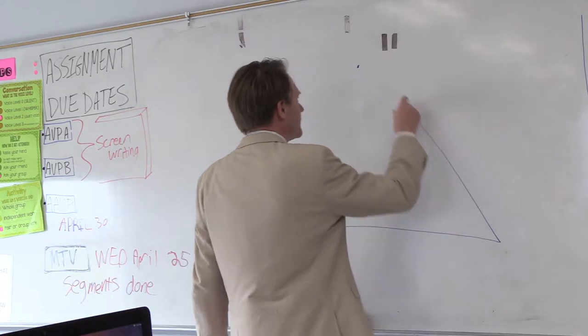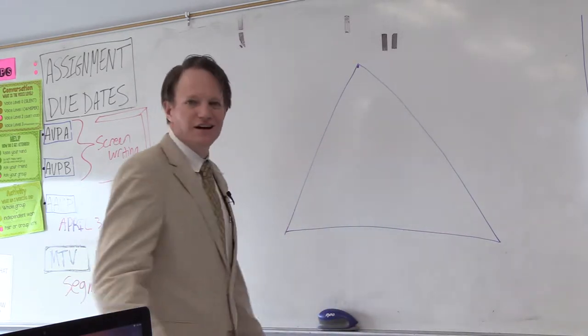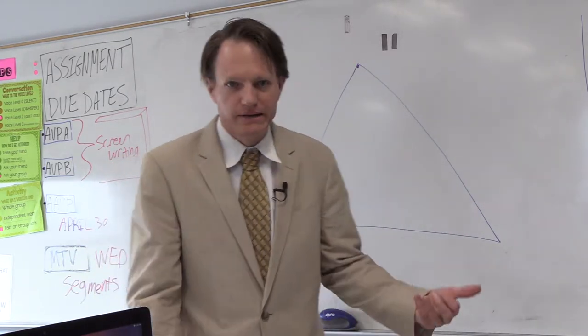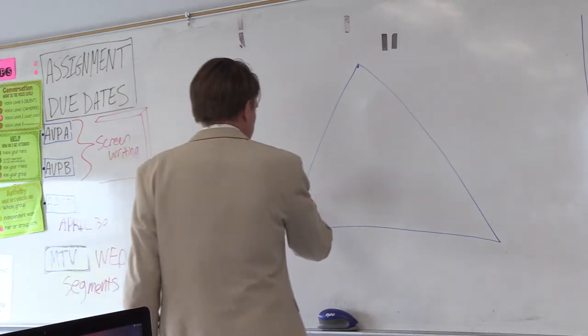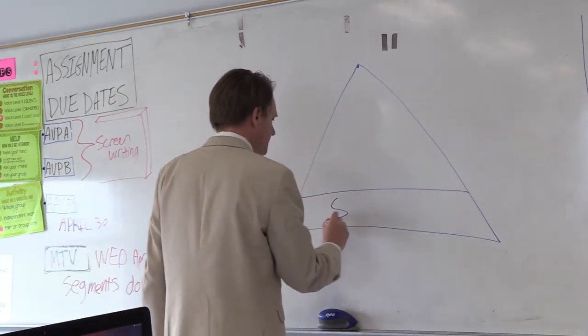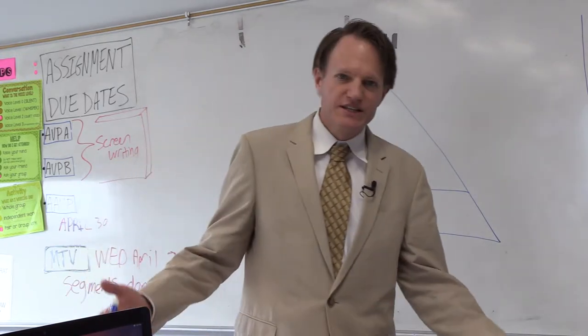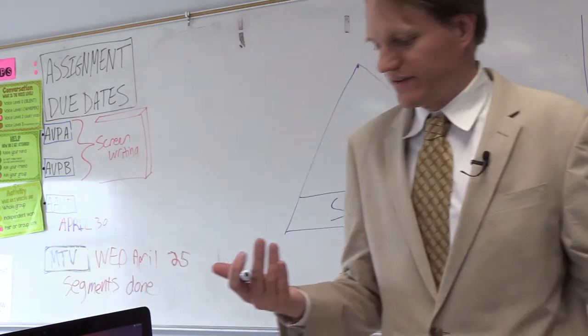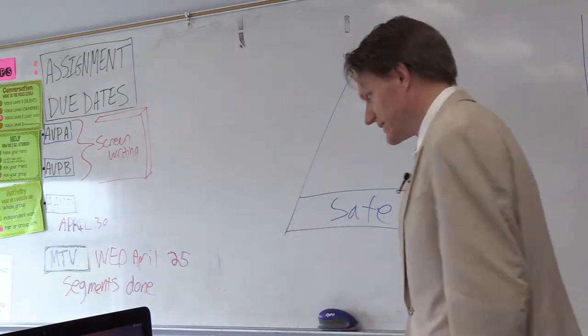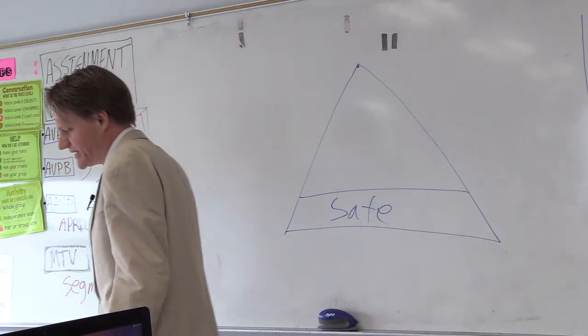The first thing I want to talk about is basically drawing a triangle on the board. So this is something that I do when I enter the classroom. Draw a triangle on the board, and then at the bottom I write safe. Sometimes you get the attention of the students by seeing that you have a dry erase marker in your pocket that you brought with you and you write safe.